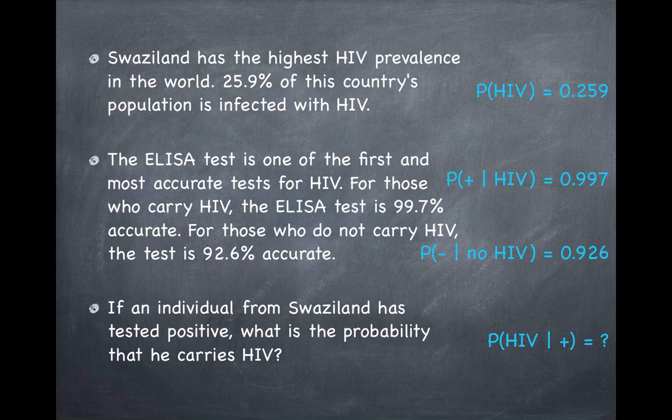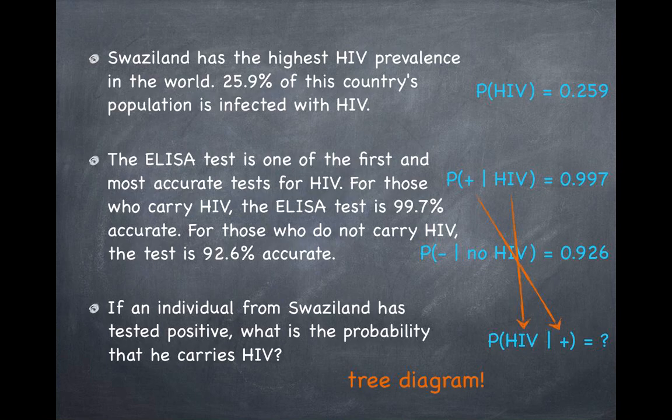One thing you should realize here is that earlier we're given a probability — the accuracy rate of the test — and now the question we're posed is really reversing the conditions. This is when a light bulb should come on and make you think about tree diagrams, because tree diagrams really help us organize these pieces of information and work our way through the problem so that we can get to the final answer. So how do we draw tree diagrams?